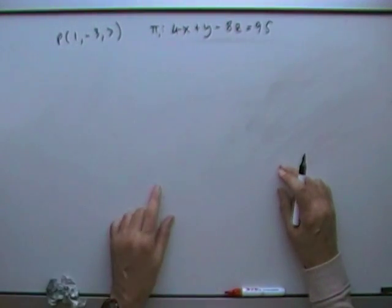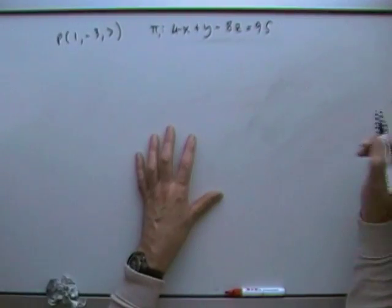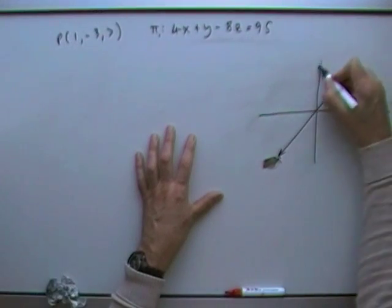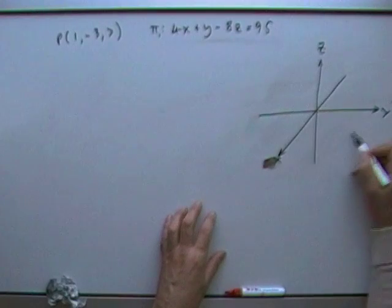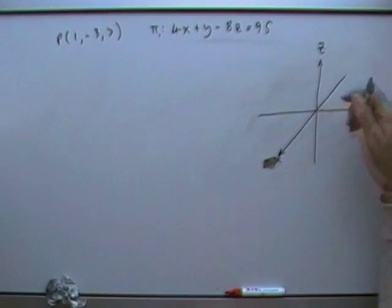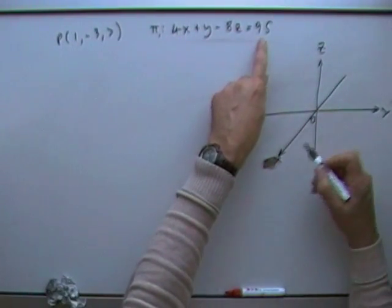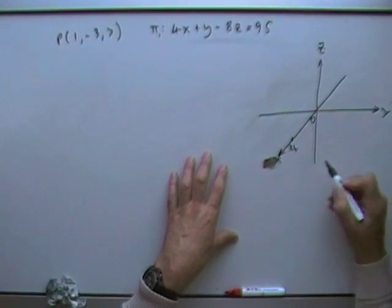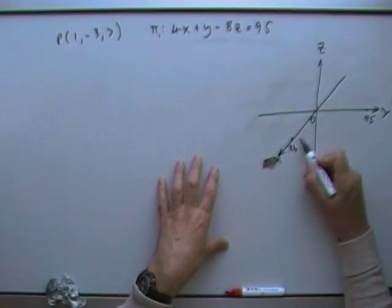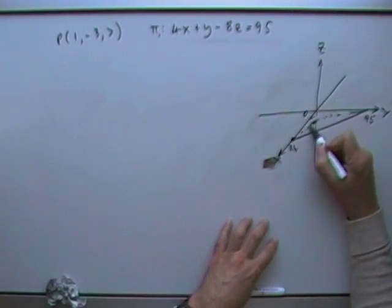Second example with different numbers: what's the distance of this point to that plane? You could use the formula straight away, but it's handy to visualise. Where does the plane intersect the axes? Make Y and Z zero — it cuts X at about 24. Make X and Z zero — that's 95. Make X and Y zero — that gives about negative 12, so it's cutting below the floor. This plane cuts down through, passing under the origin.